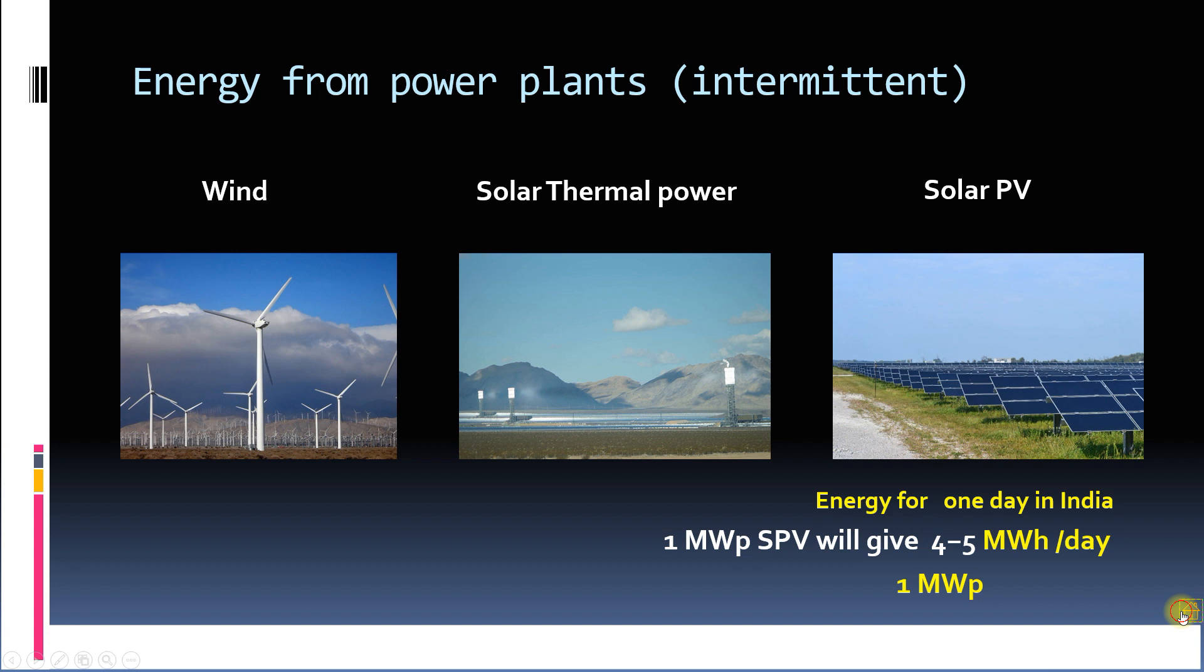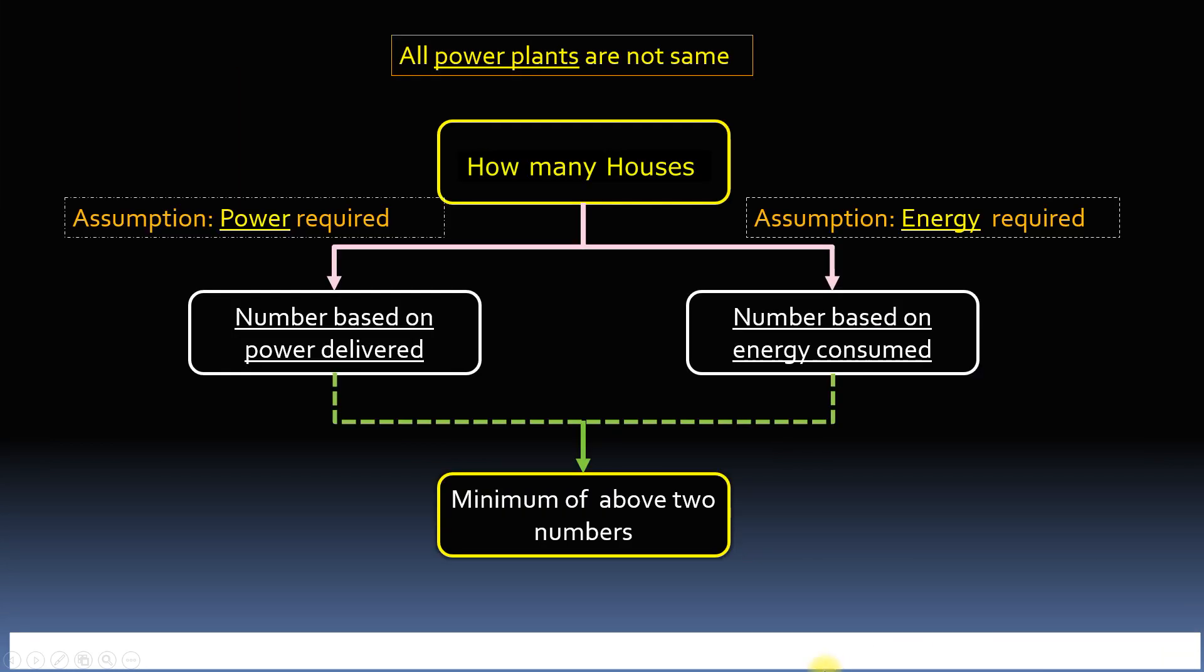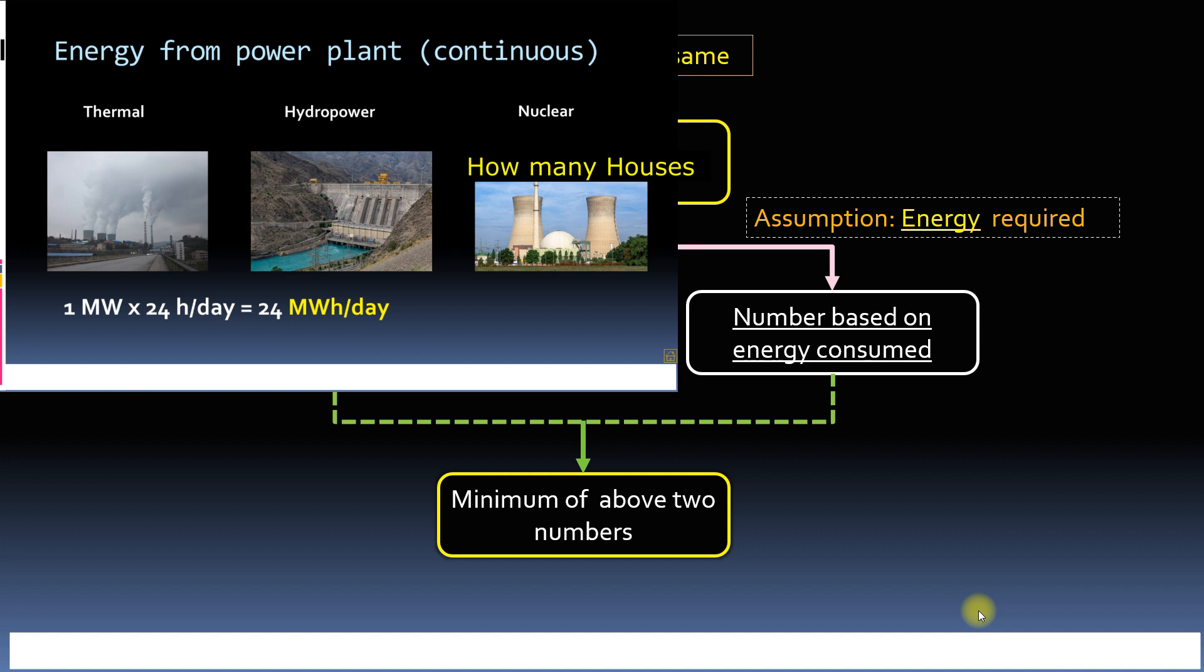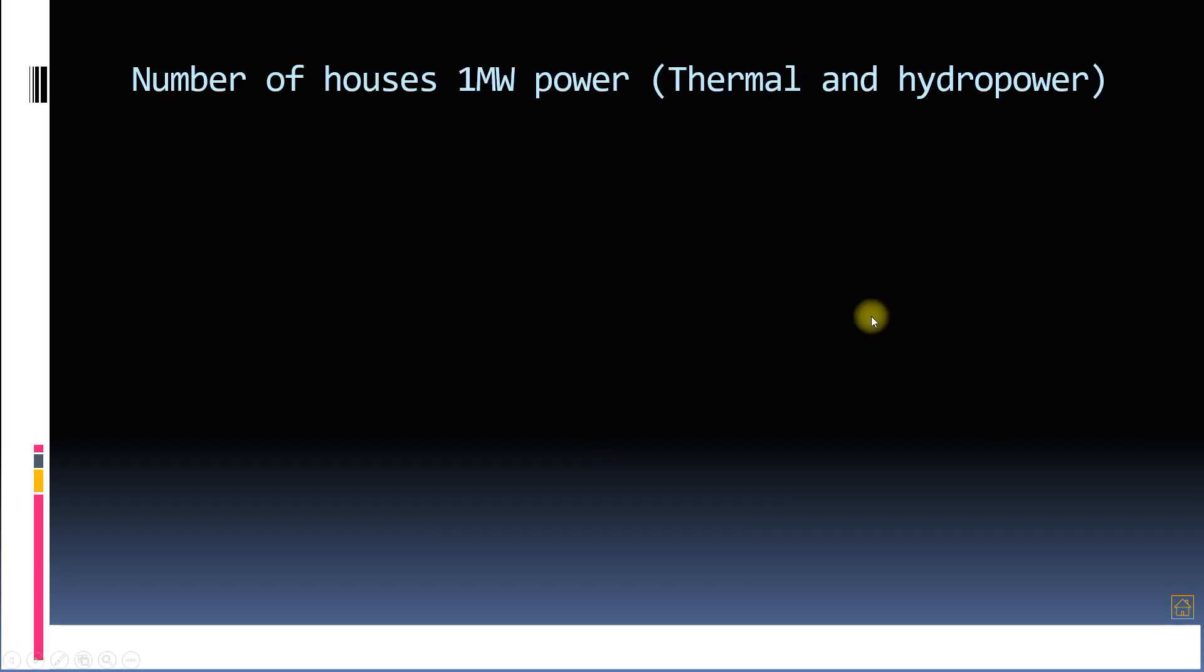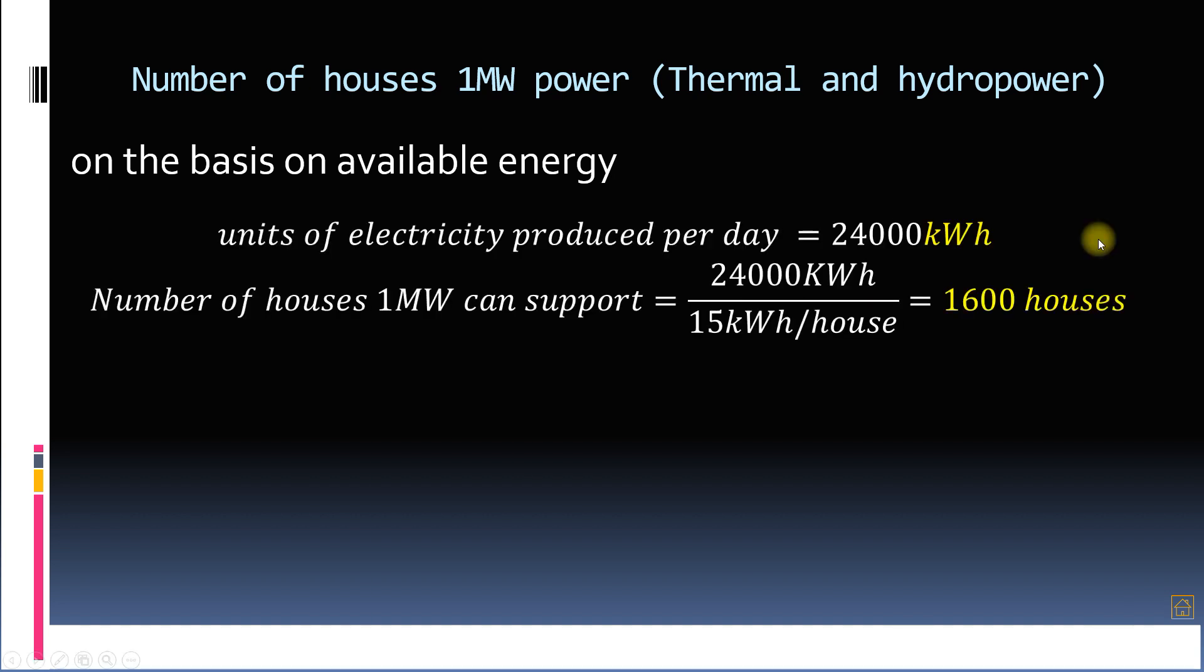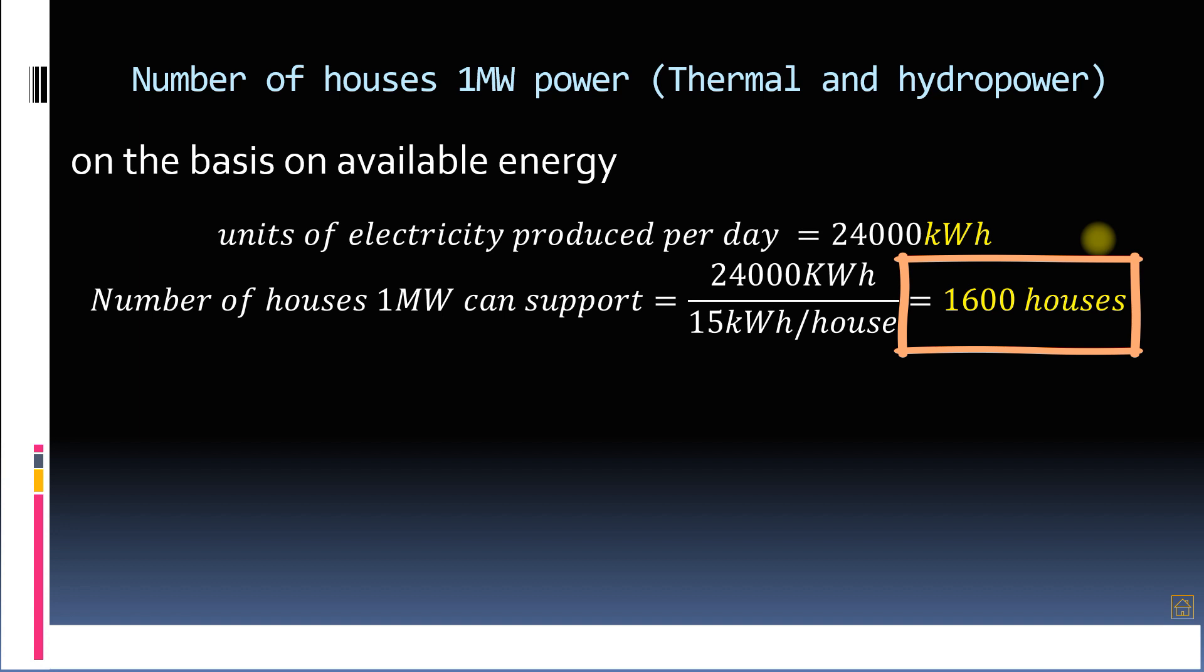Let's do the calculation now for the first type of power plants which can supply power continuously. On the basis of energy, for 1 megawatt continuous power plant we will get 24,000 kilowatt hours of energy per day. The energy consumed per house is 15 kilowatt hours. Therefore, we will get 24,000 kilowatt hours divided by 15 kilowatt hour per house. That is around 1600 houses. So 1600 houses can be supported by 1 megawatt continuous power plant on the basis of energy consumption.